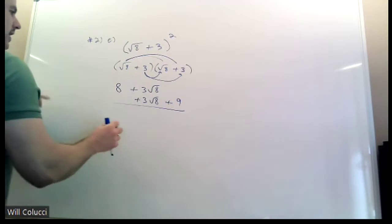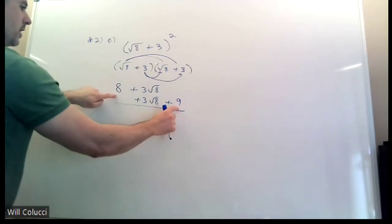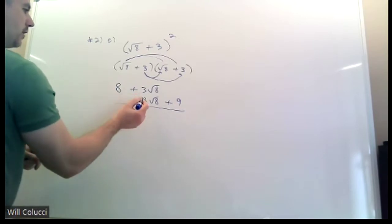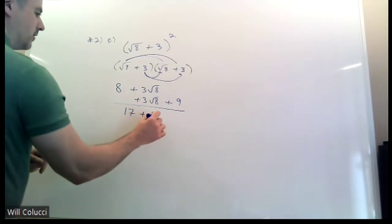I'm going to combine the things that go together, which are the numbers. 8 and 9 make 17. 3 radical 8s and another 3 radical 8s is 6 radical 8s.